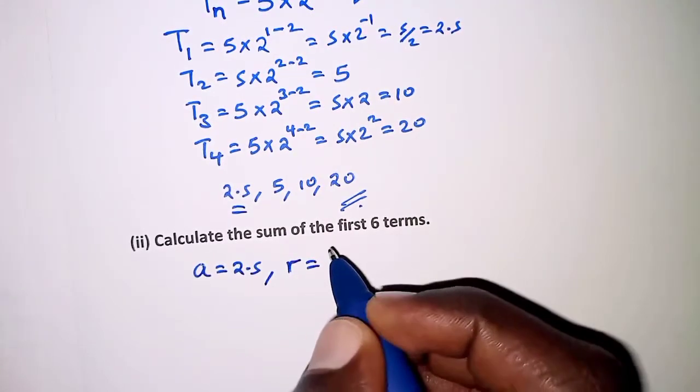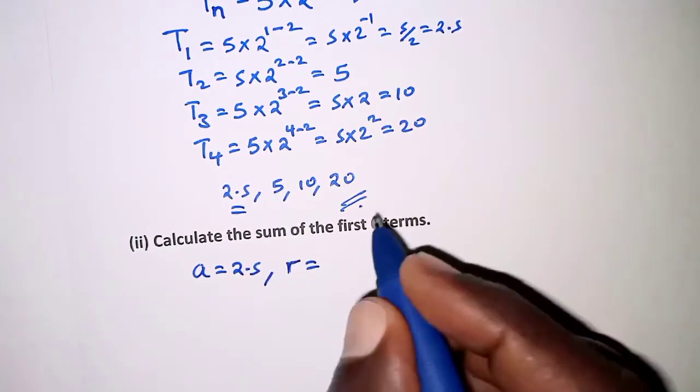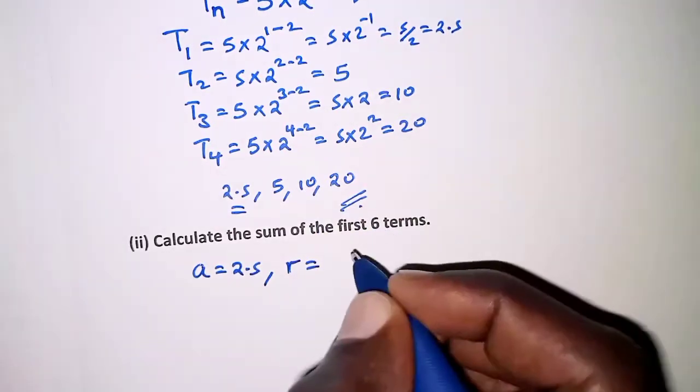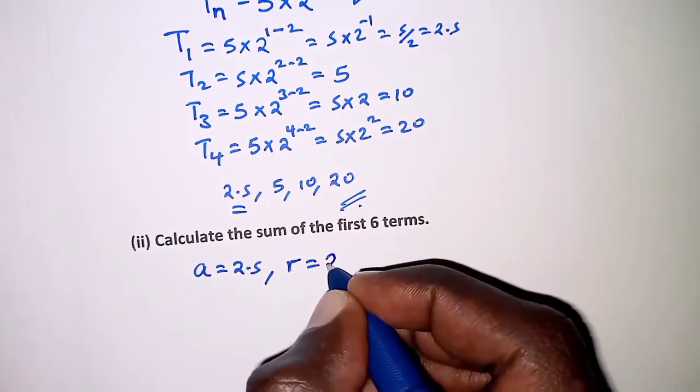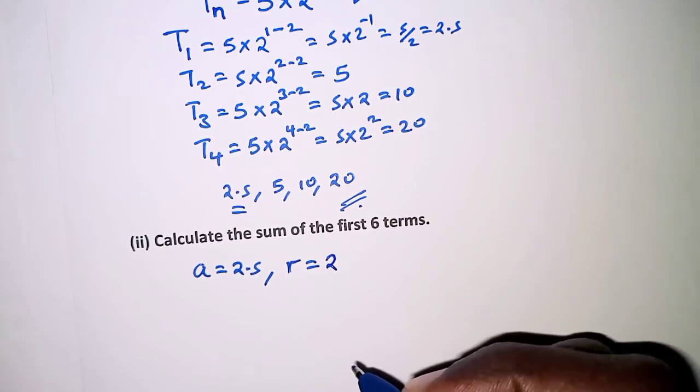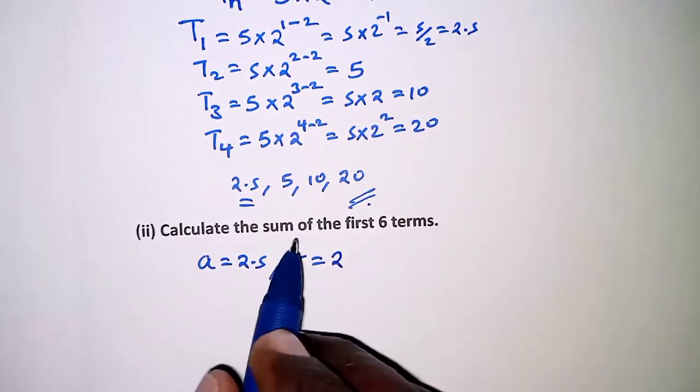and the common ratio is—you can take 5 over 2.5, or 10 over 5, or 20 over 10—and we realize that the result is 2. So from here we can now use the formula for the sum of